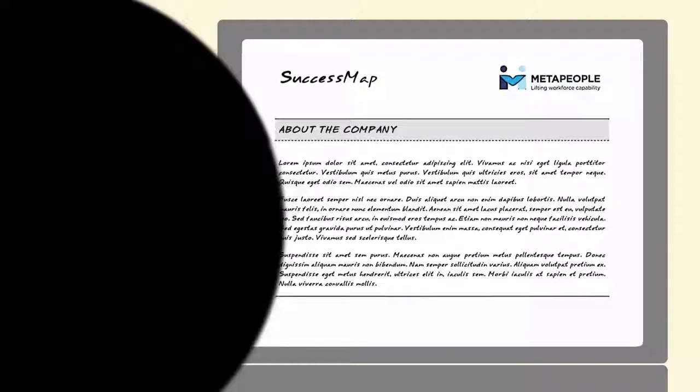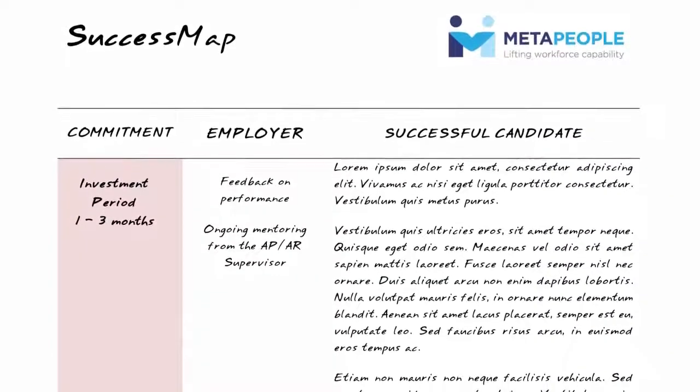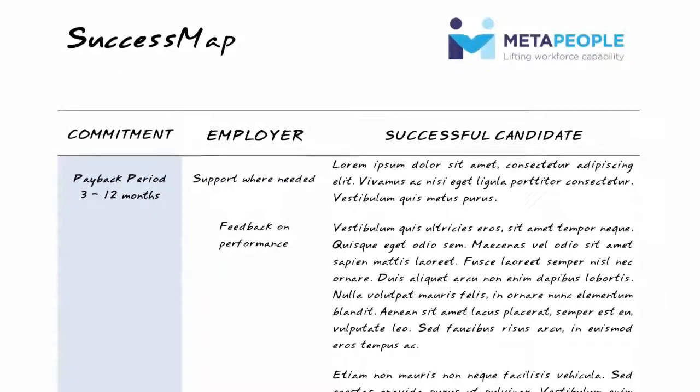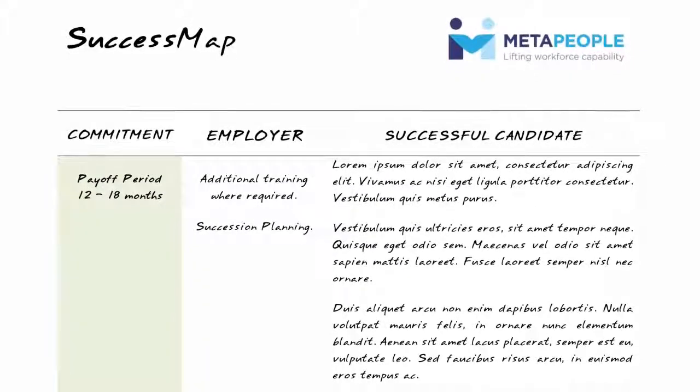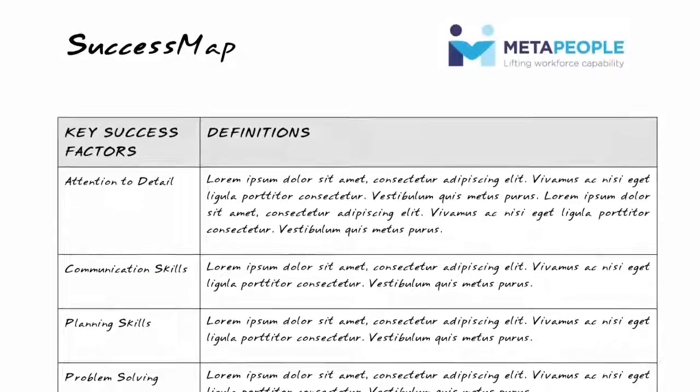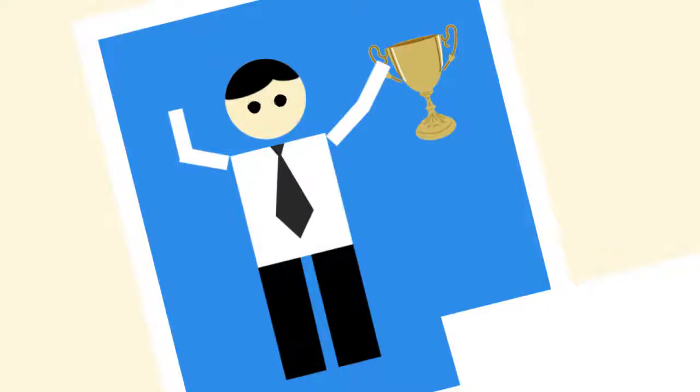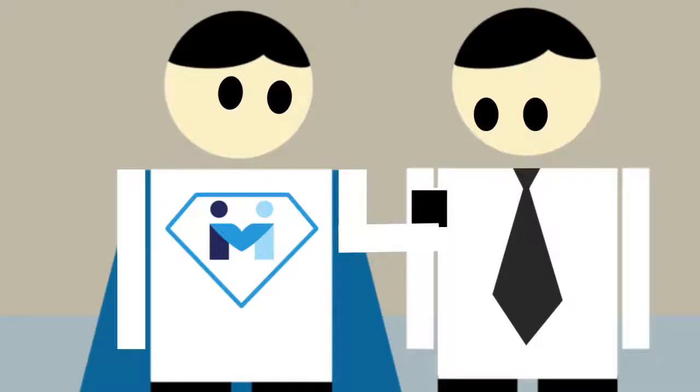Because of Meta People's unique success mapping process, we're able to present an extremely well-defined role that candidates can seriously consider, together with insights on the type of organisation they'll be working for and culture they'll be stepping into. We also provide a clear understanding of what success will look like for them in the role when it's achieved.